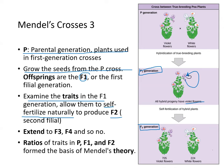Once you do that, you get these strange ratios — you get purple and you get white. He then extended to F3, F4, and so on. Basically, the ratios of traits in P, F1, and F2 formed the basis of Mendel's theory.